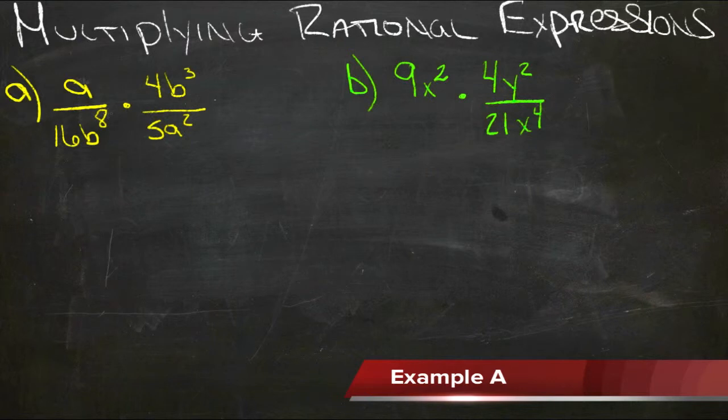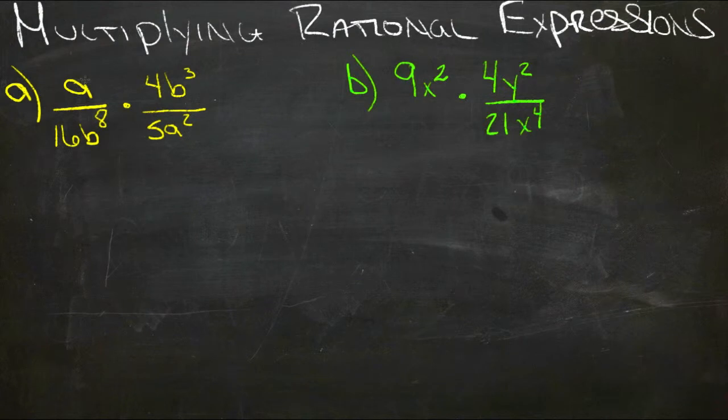So here we have a over 16b to the eighth times 4b cubed over 5a squared. So top and bottom, things that are the same include a to the first here, need a different tool, a to the first up there, which cancels with one of the a's down here. So now we have a to the first on the bottom and just a 1 up here.